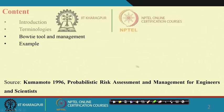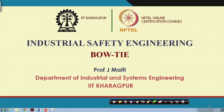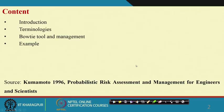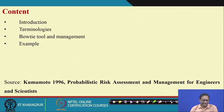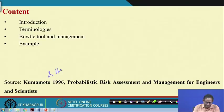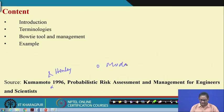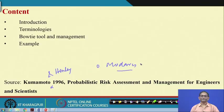Let us understand the concept and utility of bow tie. We will cover introduction, terminologies, bow tie tool and management, and several examples. We primarily rely on two books: Henle and Komamoto, and another book on reliability and risk assessment by Morder-Race. We rely on these two books, and this discussion will take about 30 minutes. You will enjoy it because most of the things you already know, so to some extent it will be a revisit to fault tree and event tree.